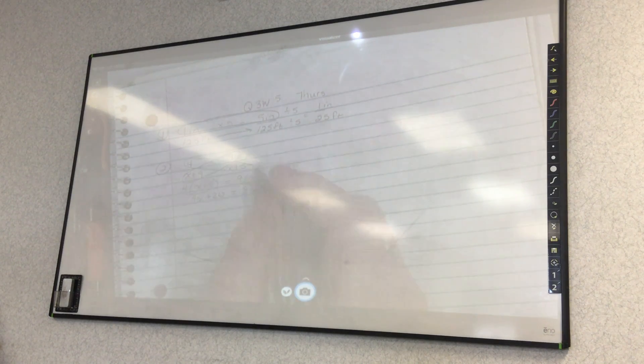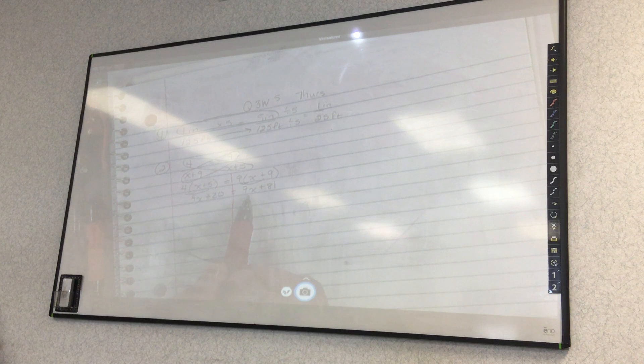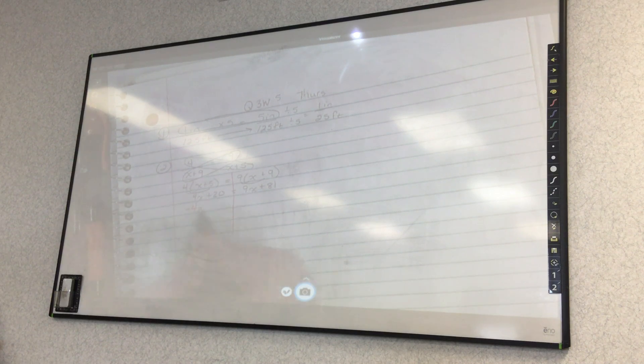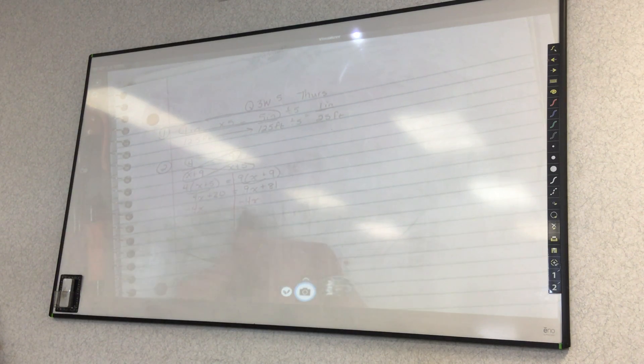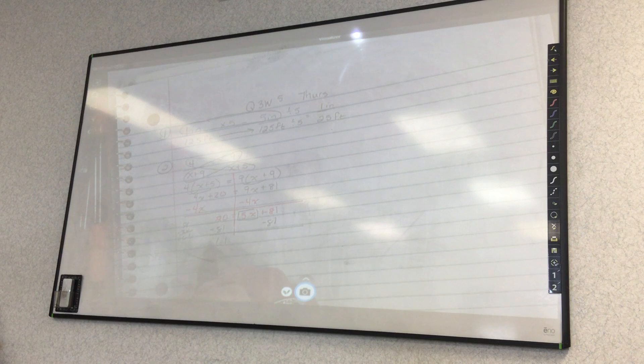And four times five is plus 20 equals nine times x is 9x. Nine times nine is 81. Then we draw our line. And I'm going to combine my x's. I think I'm going to move this x over here so I don't have to deal with negative x. I'm going to have a negative 4x minus 4x. So then I have 20 equals 5x plus 81. Then I'm going to box up my 5x. Subtract 81 from both sides. So one is positive and one is negative. So I would do 81 minus 20 is 61. And that is negative.